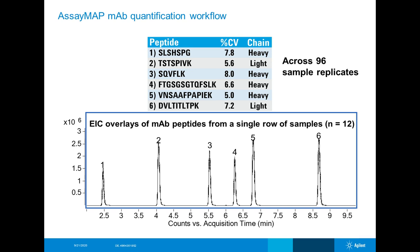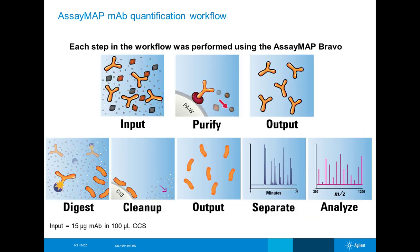Another example is working with a MAB for quantitation. These peaks are 12 different samples actually lined up on top of each other, showing very good reproducibility. The different peptides and their percent CVs are all less than eight percent CV — the highest in this table. This goes to show the reduction in variability and the increase in recovery rates achievable with this technology.